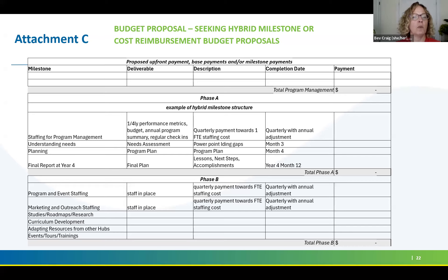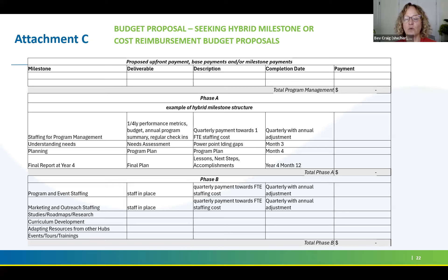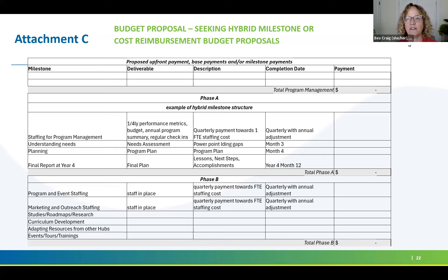Here's an example of the hybrid approach. In Phase A, for the program management task, you might have staffing related to checking in with MassCEC, budgeting, tracking performance metrics, and annual program summaries — covered as a consistent base funding level on a quarterly or monthly basis. Different from that are deliverable-type things: a needs assessment, a program plan, a final plan — where you might pull in more staff or an outside consultant, with payment tied to a specific milestone or deliverable.